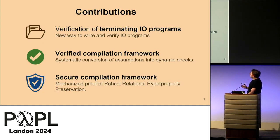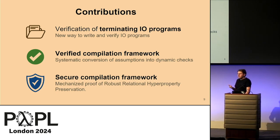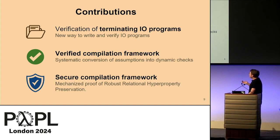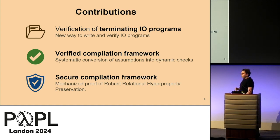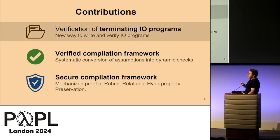To make this solution possible, we bring a few contributions. The first is a new way to verify terminating I/O programs that benefits from SMT automation. The second is a compilation framework that systematically converts assumptions into dynamic checks — the first such solution to be verified. We also prove a secure compilation criterion that is one of the strongest, even stronger than full abstraction.